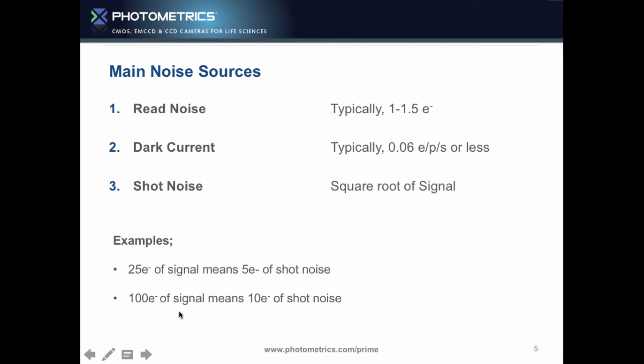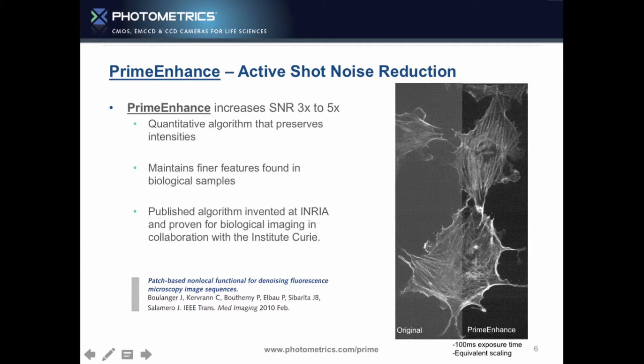When you have 100 electron signals, still a small signal, you've got 10 electrons of shot noise. So shot noise is the dominant noise source, and that's what Prime Enhance does.